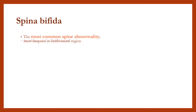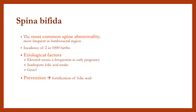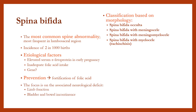Spina bifida is the most common spinal abnormality, with an incidence of 2 per 1000 births. Etiological factors involve elevated serum alpha-fetoprotein in early pregnancy or inadequate folic acid intake, and are related to genetic factors. Prevention focuses on fortification of folic acid. Assessment focuses on associated neurological deficits — whether limb function or bladder and bowel incontinence. Classification based on morphology includes: occulta, meningocele, meningomyelocele, myelocele, and rachischisis.